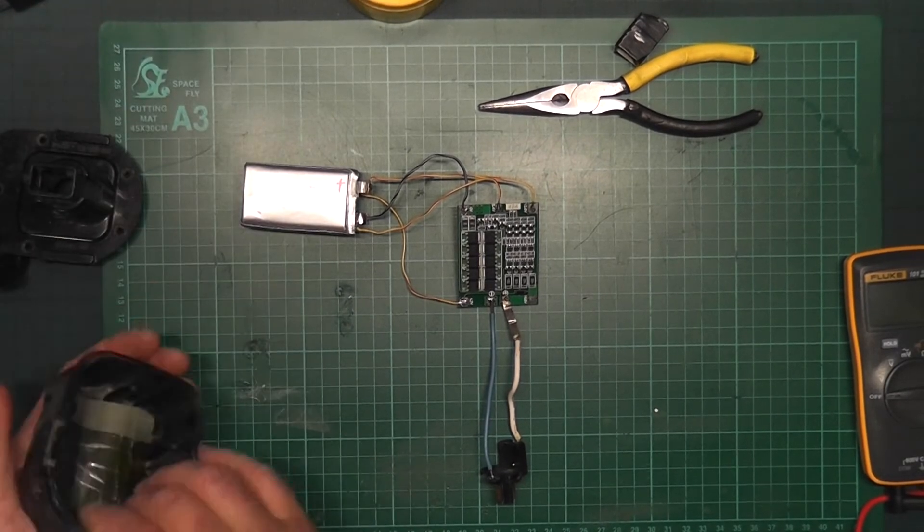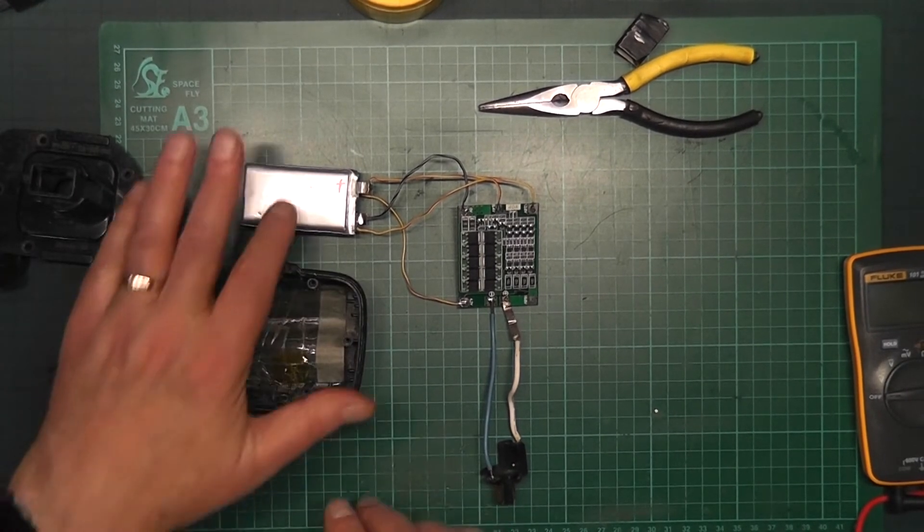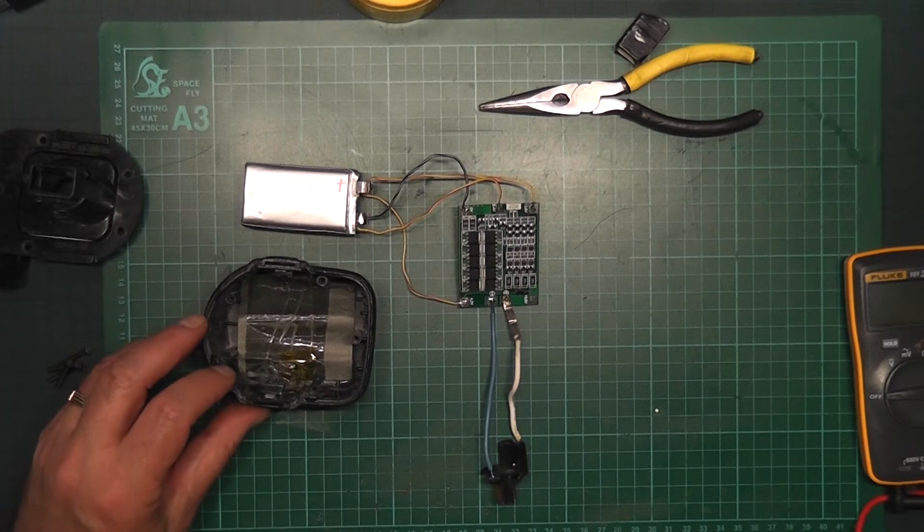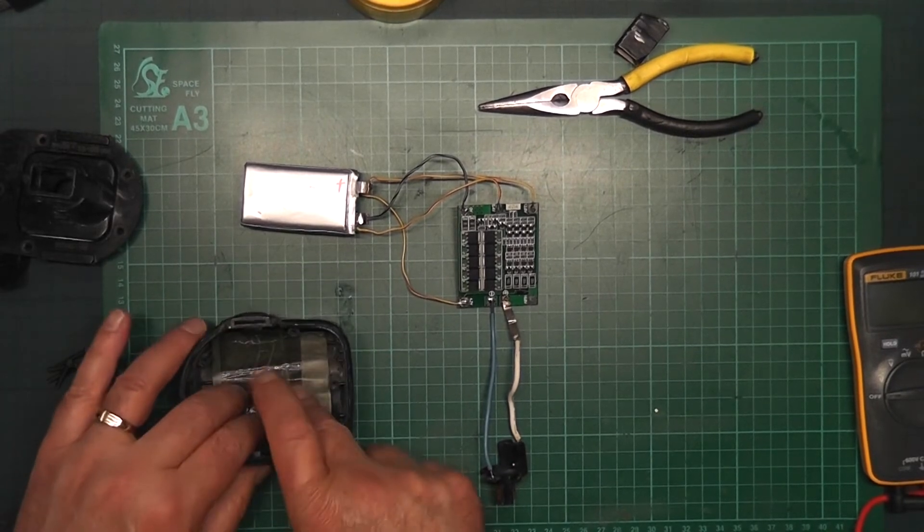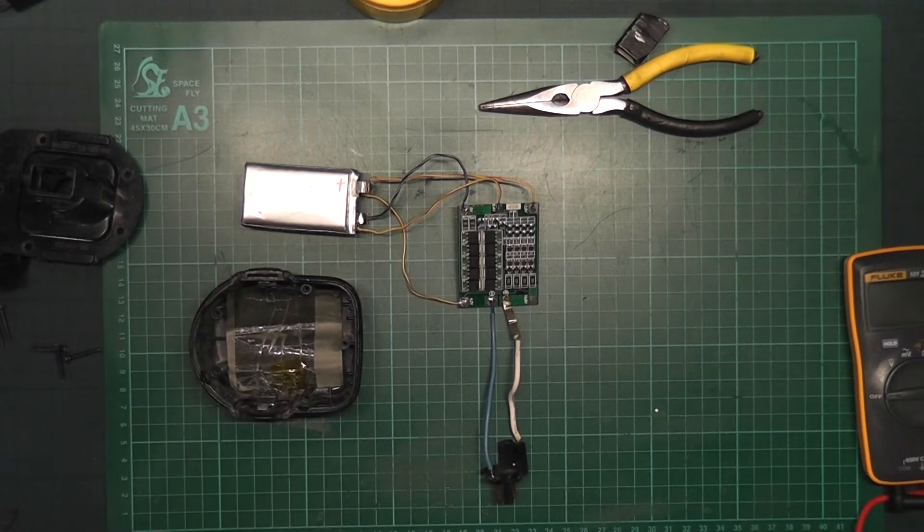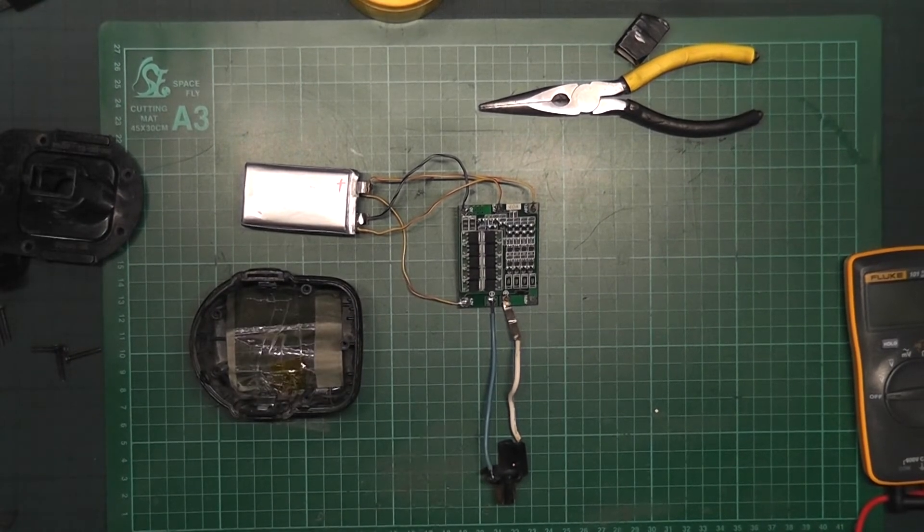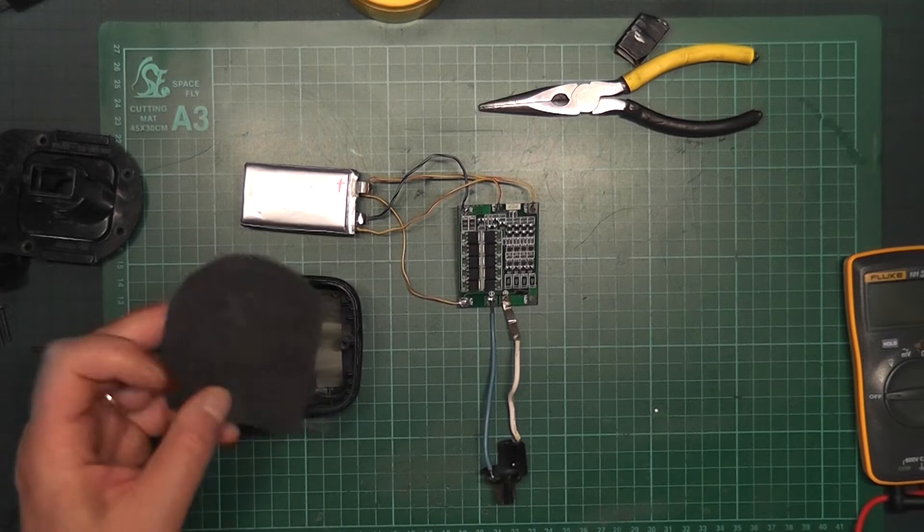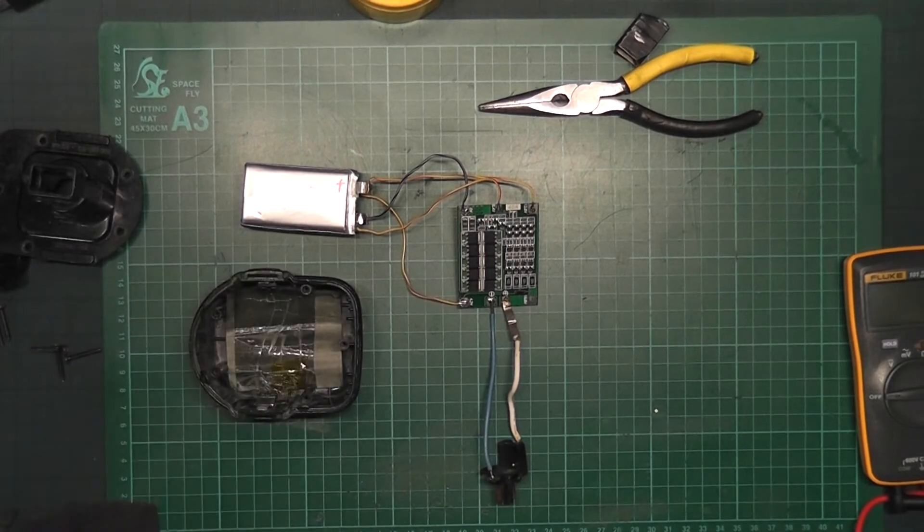Now the batteries are actually smaller than the container, so what we'll do is bulk up the container a bit with probably a bit of insulating paper, some sponge, and we should be able to get it nice and snug.